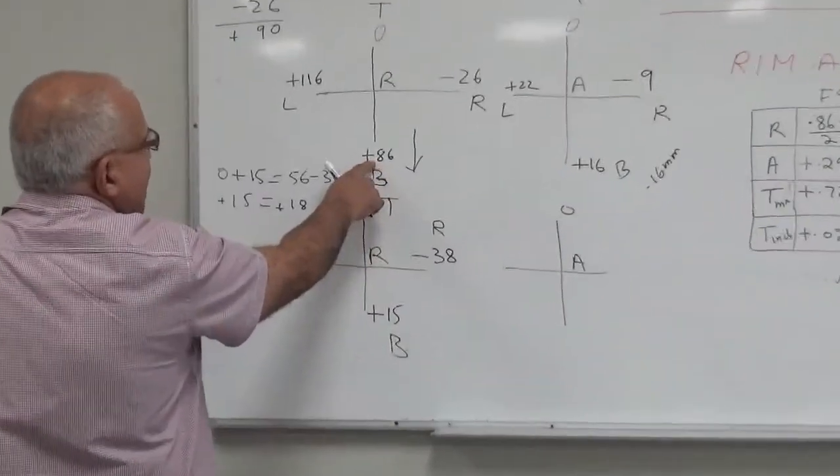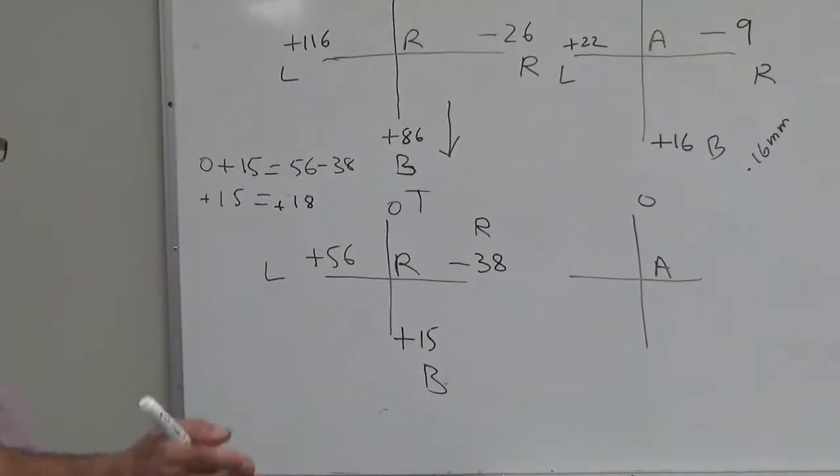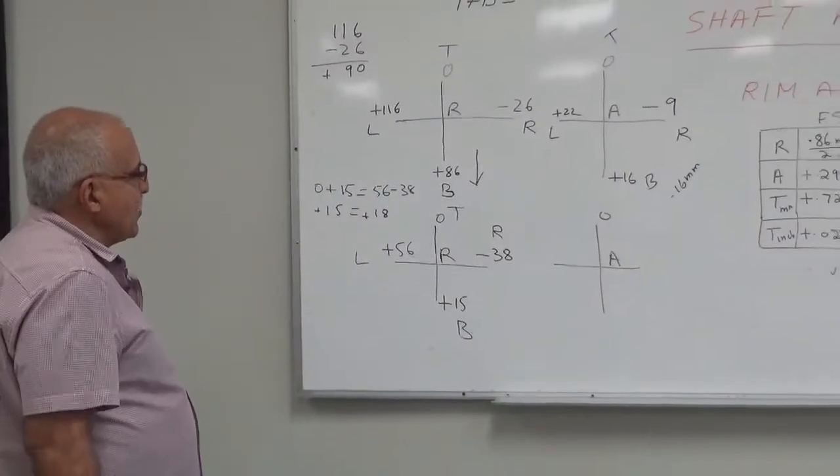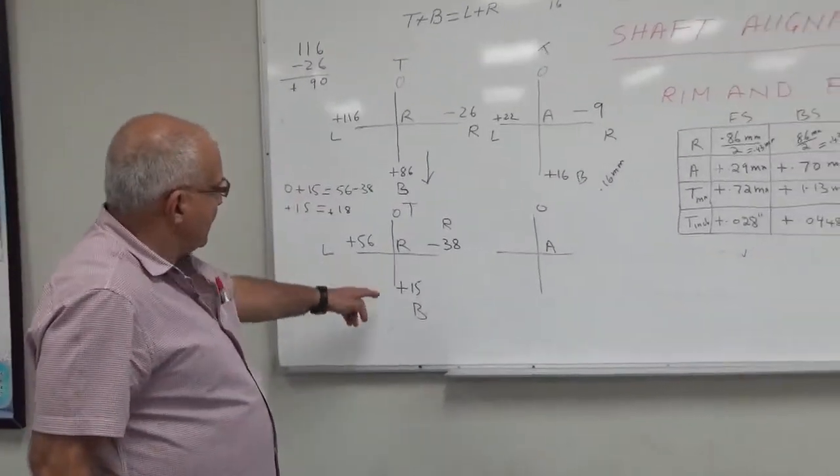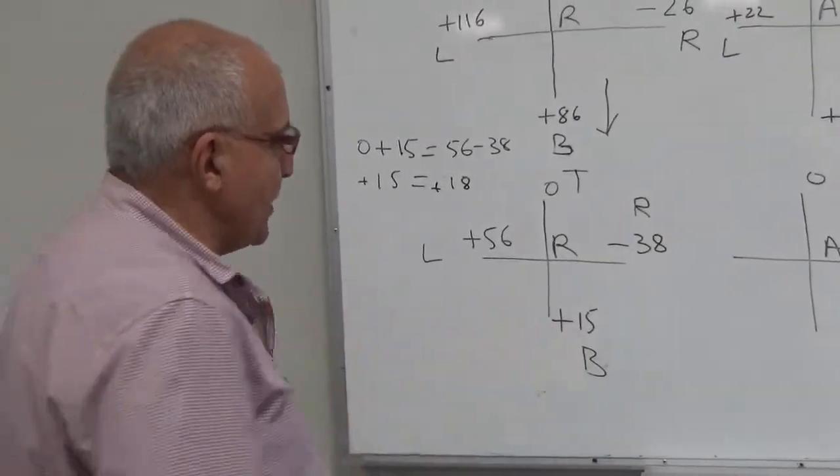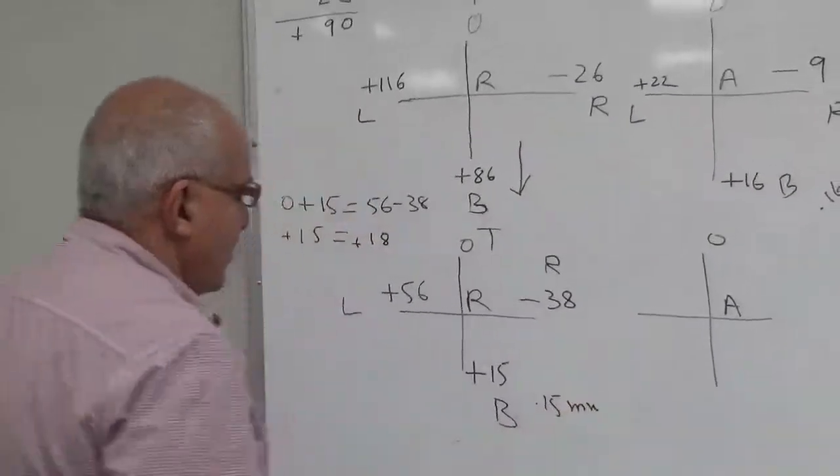So now my reading is plus 15. Before it was plus 86, so this is good reading for this pump. For example, if the speed of the motor is near about 2000, then total reading which is 15 millimeter is a good result for vertical alignment.